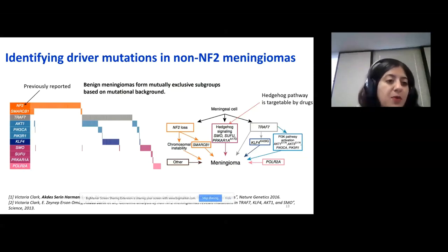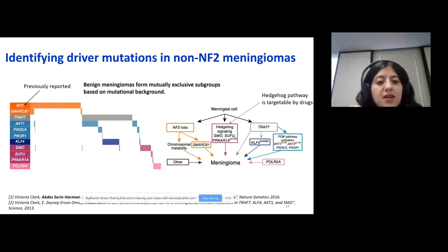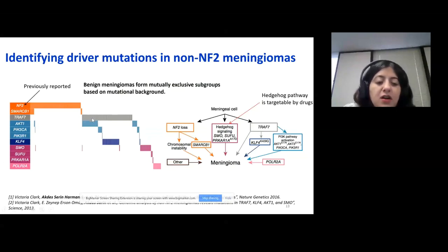NF2 mutation was previously reported, but we identified other driver mutations in meningiomas such as SMARCB1, TRAF7, AKT1, PIK3CA, PIK3R1, KLF4, SMO, SUFU, PRKAR1A, and POLR2A. Interestingly, these driver mutations form mutually exclusive subgroups in benign meningiomas. NF2 mutants are mutually exclusive from TRAF7 mutants, PIK3 mutants, Hedgehog mutants, and POLR2A mutants.